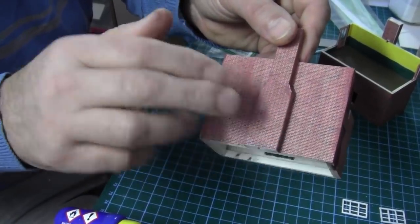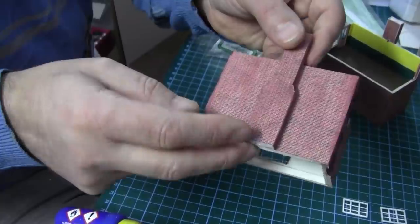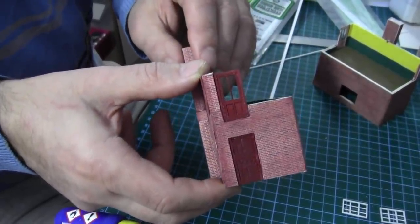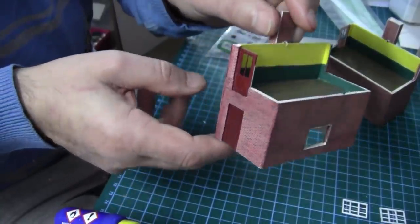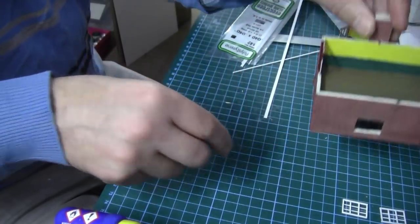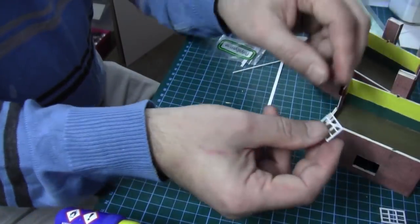Right, that's the chimneys done and they're now glued to the back of the signal box. I've also glued in the door, ready, so that we can almost start the windows. But I've already done the two little windows already, made from one by one plastic strip.